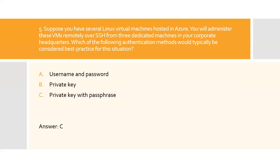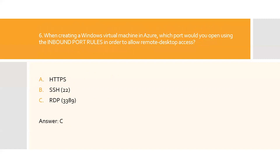Question six: When creating a Windows virtual machine in Azure, which port would you open using the inbound port rules in order to allow remote desktop access? A) HTTPS, B) SSH, C) RDP. Option C is the right answer. The Remote Desktop Protocol uses port 3389 by default, so this is the standard port you would open if you wanted to use an RDP client to administer your Windows virtual machine.